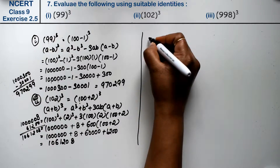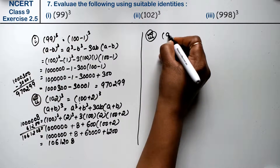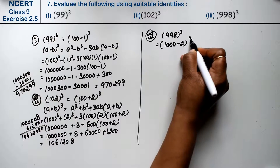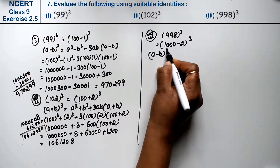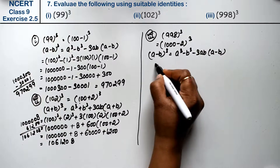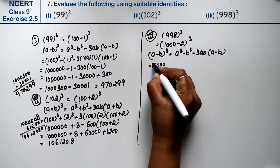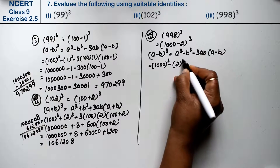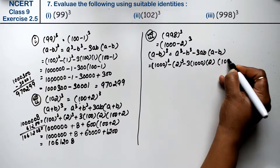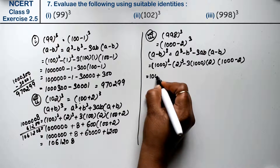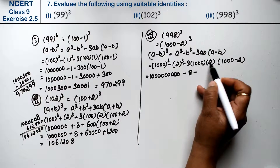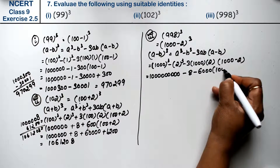Let's do the third part. Third part is 998 cube. So what can we write 998 as? (1000 minus 2) whole cube. Now the formula for (A minus B) whole cube is: A cube minus B cube minus 3AB times (A minus B). So: 1000 cube minus 2 cube minus 3 into 1000 into 2 times (1000 minus 2).